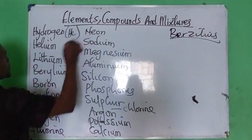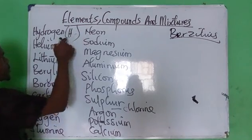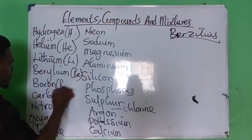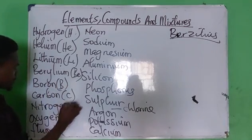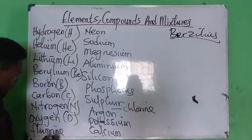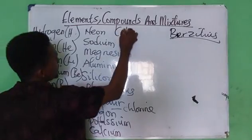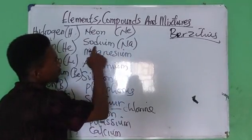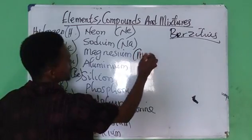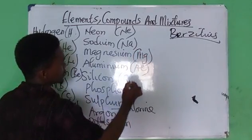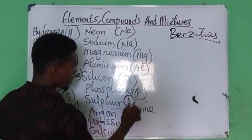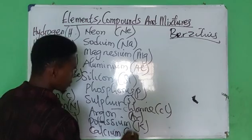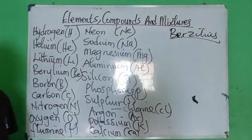Hydrogen is represented as H; helium is He; lithium is Li; beryllium is Be; boron is B; carbon is C; nitrogen is N; oxygen is O; fluorine is F; neon is Ne. Sodium is Na — note that it is not 'So' or 'Sd.' Magnesium is Mg; aluminum is Al; silicon is Si; phosphorus is P; sulfur is S; chlorine is Cl; argon is Ar; potassium is K; and calcium is Ca. So all of these are the first 20 elements and their symbols.